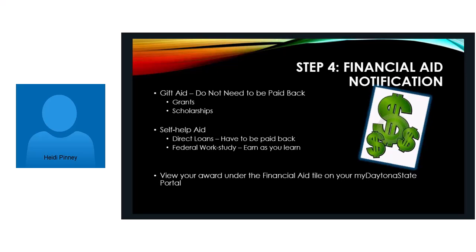You can view your financial aid notification — your financial aid award — anytime you need to. When you go into your My Daytona State portal and click on the financial link tile, you'll see on the left-hand side a year. Click on that year and it will show your awards for you.